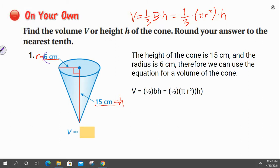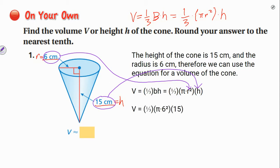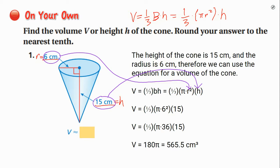The volume of the cone is one-third times the base, which is pi r squared, times the height. So we substitute 6 in for r and 15 in for h. First, I do 6 squared, which gives me 36. Then I multiply 36 times 15 and divide by 3, which gives us 180 pi. Multiplying pi through, we get 565.5 centimeters cubed. Make sure we use centimeters cubed as our units. They did want the answer to the nearest tenths, so make sure you had your answer to the nearest tenths as well.